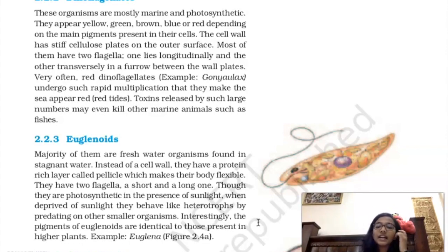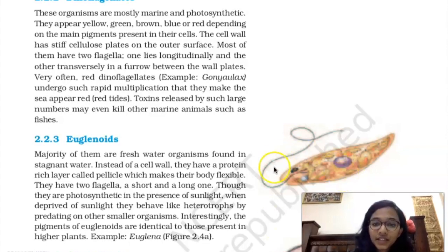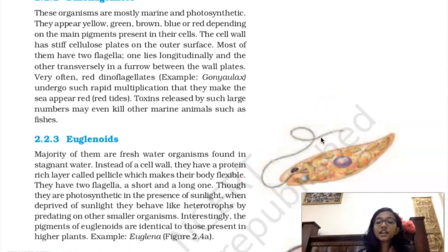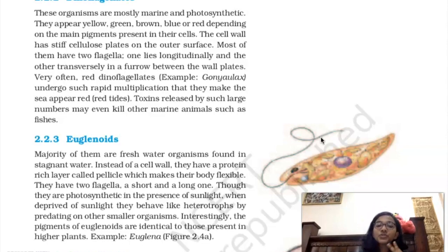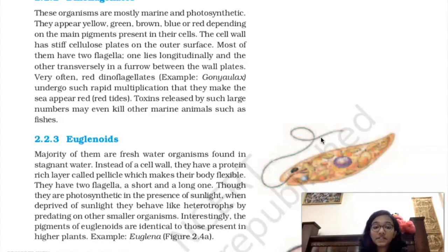Dinoflagellates have two flagella — structures used for movement. One flagellum is longitudinal (vertical direction) and the other is transverse. There is also a furrow between the cell walls, which is mostly involved in cell division.